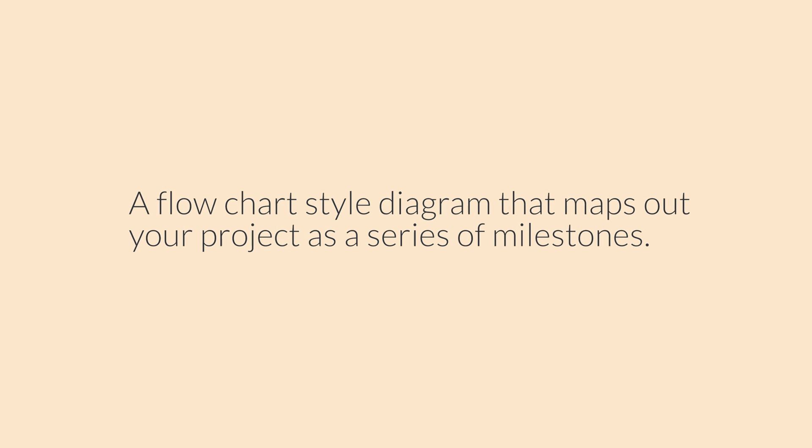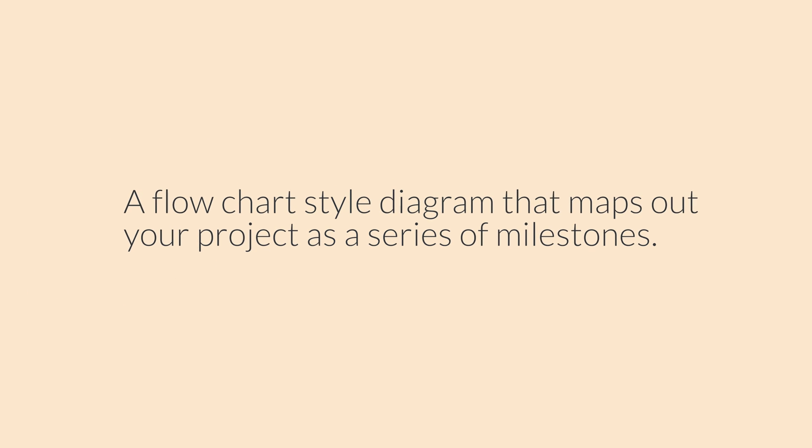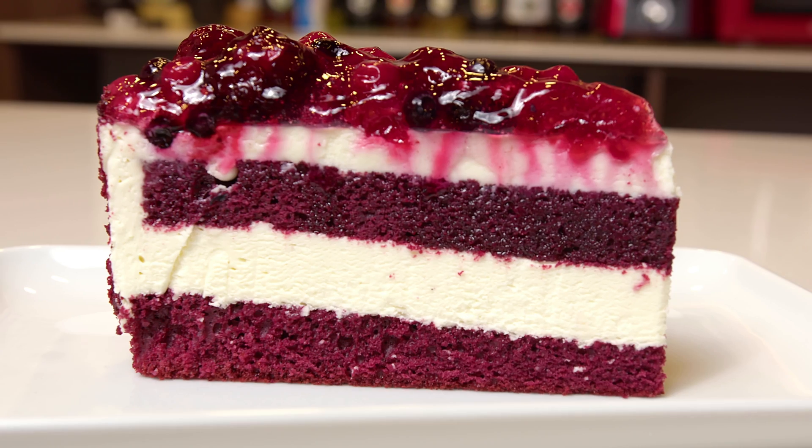So a PERT chart, which is short for Program Evaluation and Review Technique, is a flowchart-style diagram that maps out your project as a series of milestones. It's used to visualize dependencies, estimate timeframes, and find that critical path for those essential tasks that cannot be delayed. And the good news is, Draw.io makes it super easy — piece of cake.